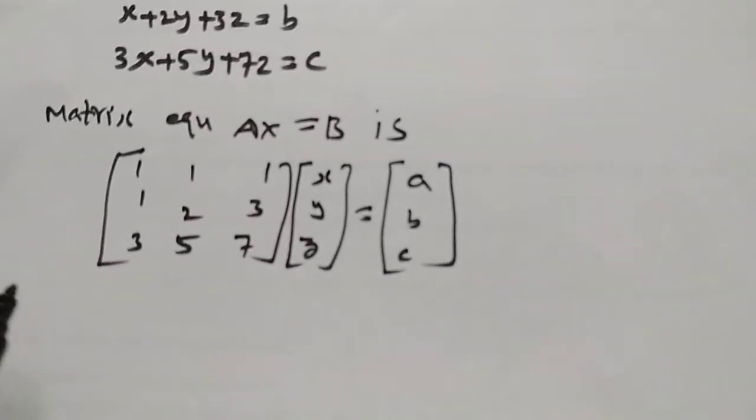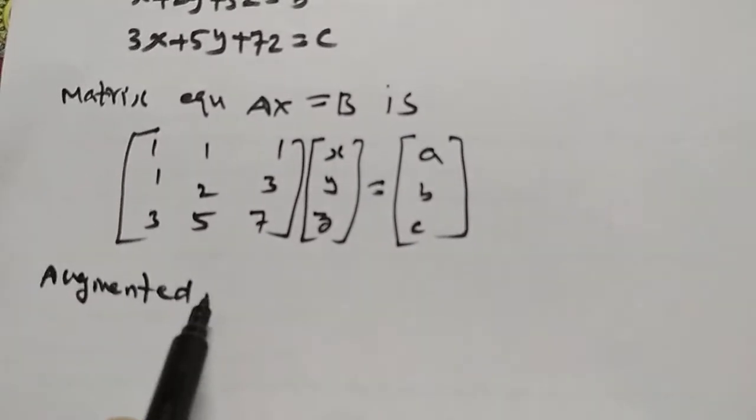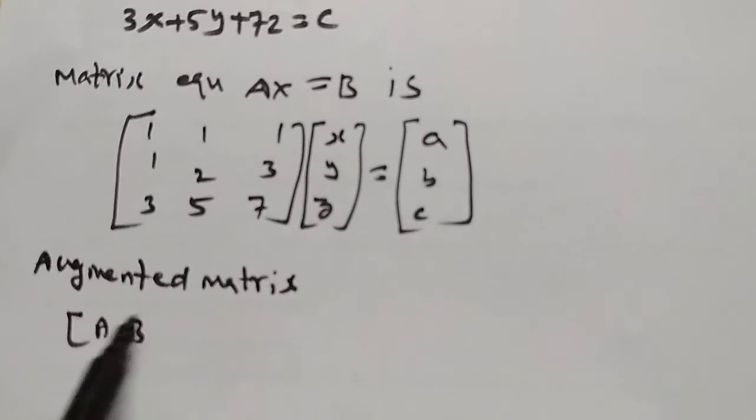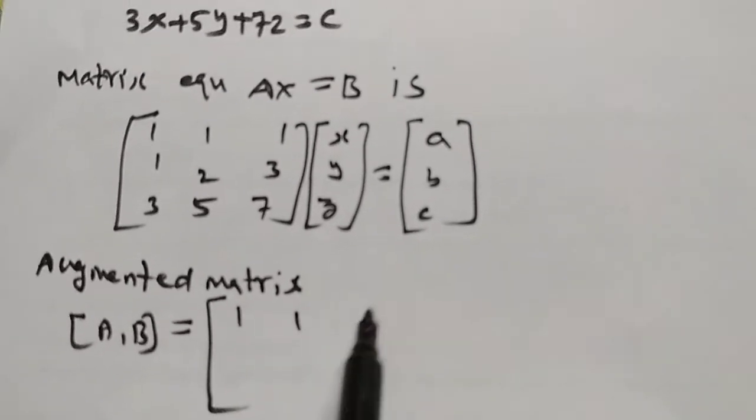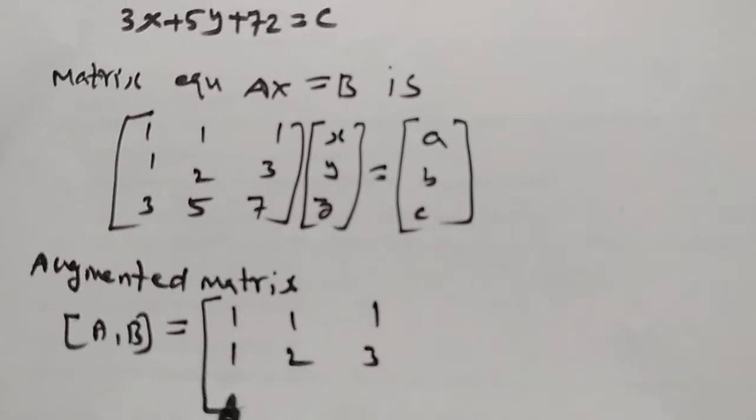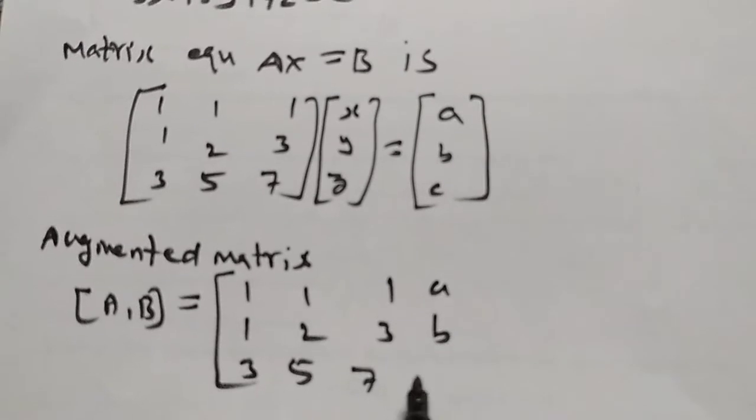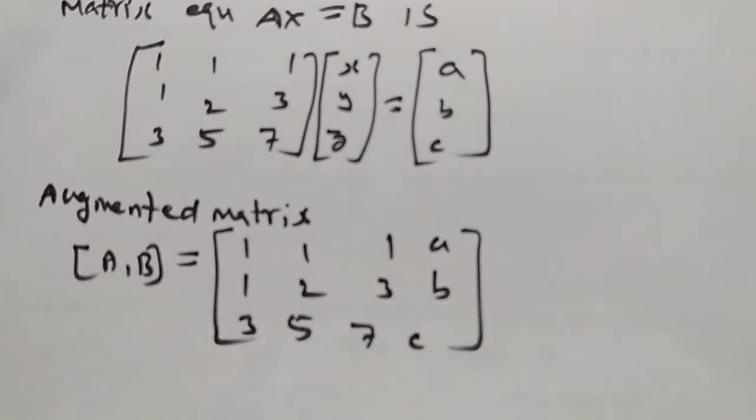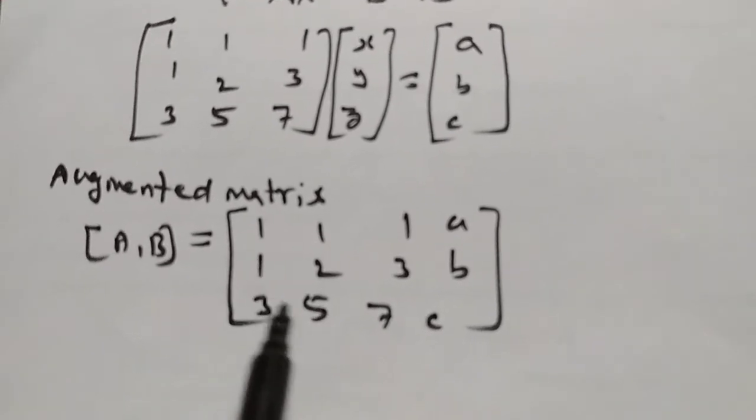Next, the augmented matrix [A|B] is: 1, 1, 1, a; 1, 2, 3, b; 3, 5, 7, c. Now performing row operations: R2 → R2 minus R1, R3 → R3 minus 2R1.